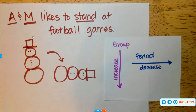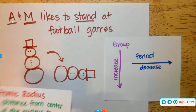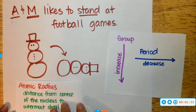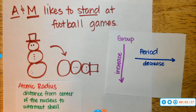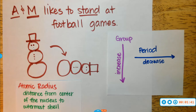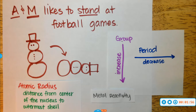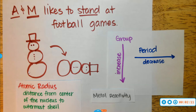Now what trends does this actually go with? The A in A&M actually stands for atomic radius — the distance from the center of the nucleus to the outermost shell. So as we go down the group, it's going to increase; as we go across the period, it decreases. Your M stands for metal reactivity — same trend: as you go down the group it increases, and as we move across the period it decreases.